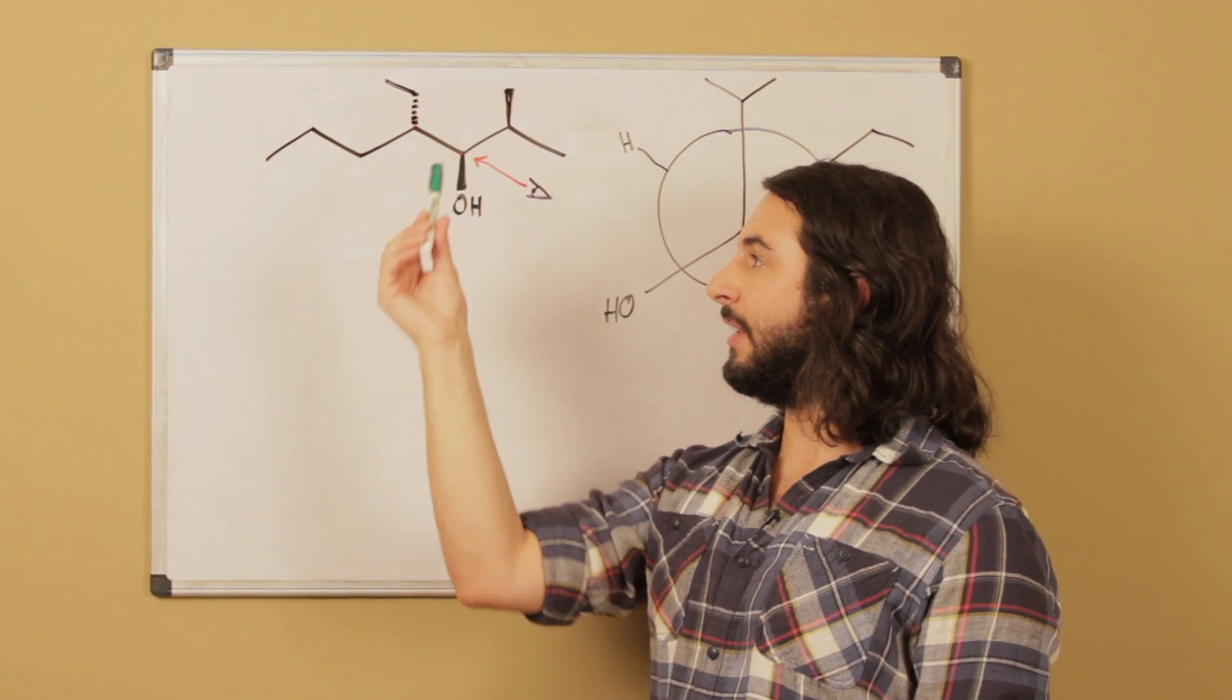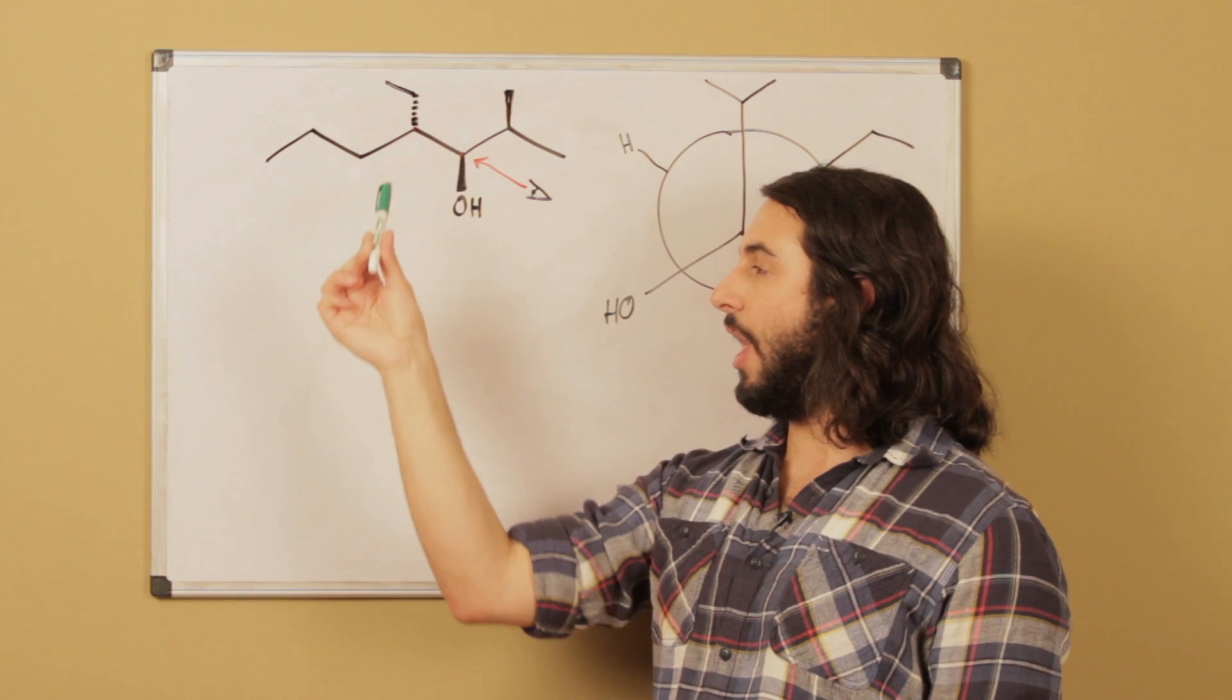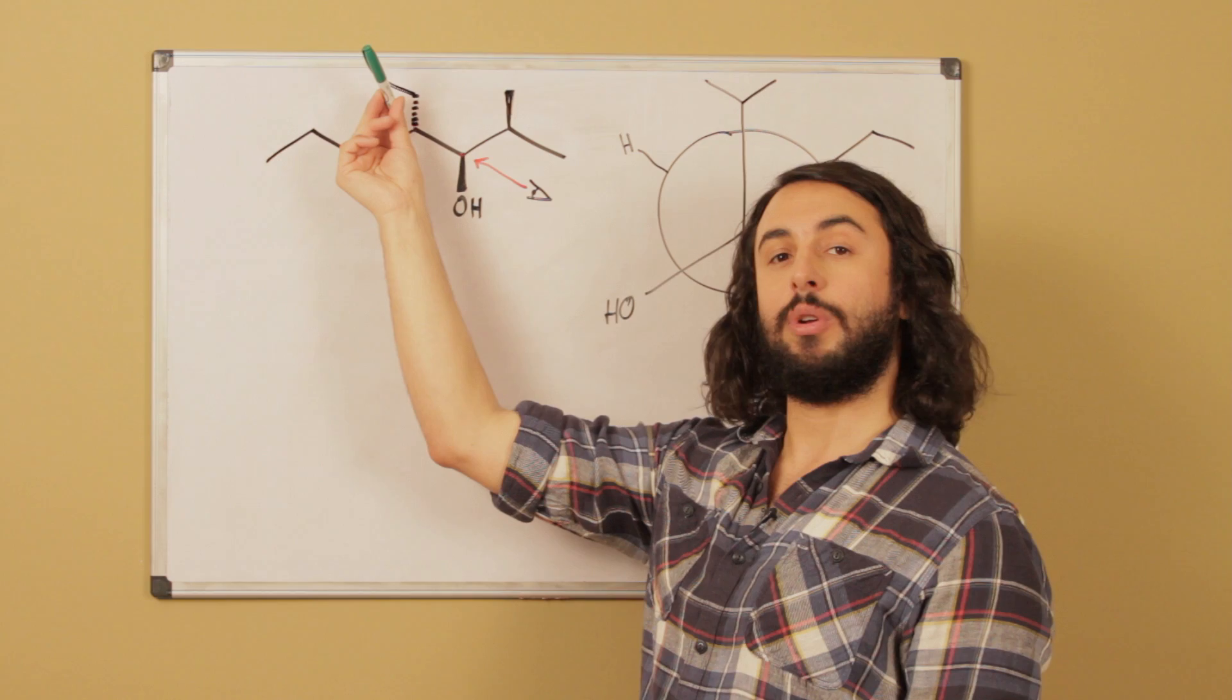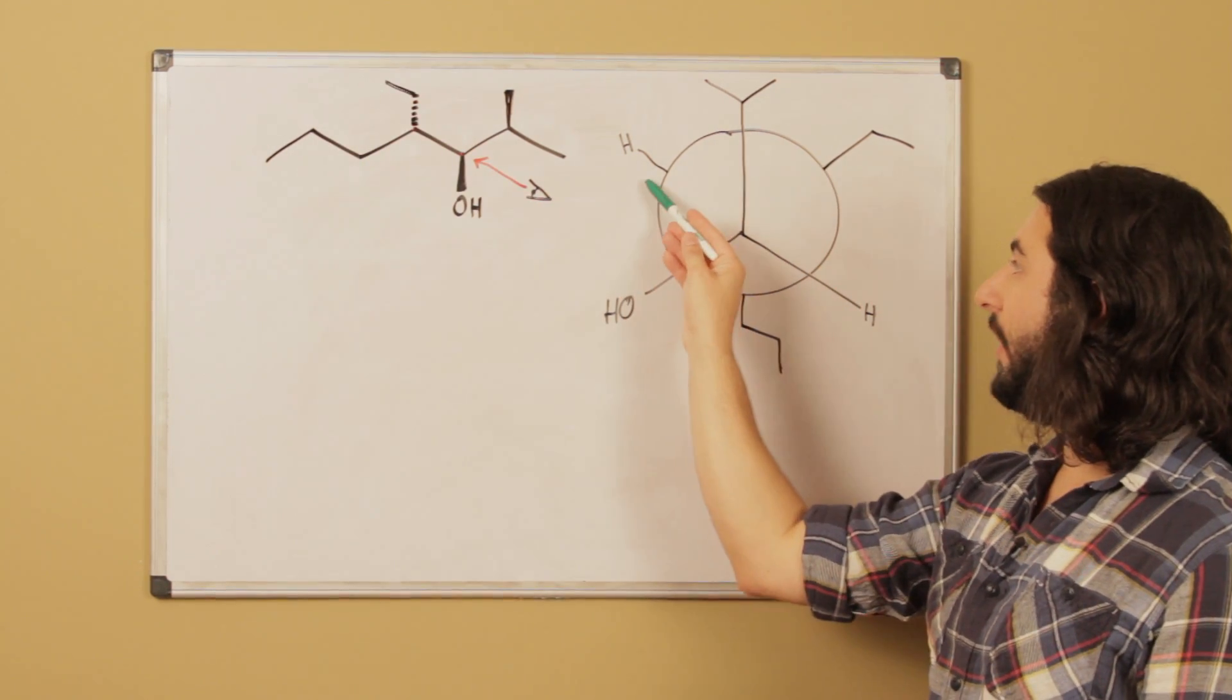On the dash bond, which is going this way, there's that ethyl group. So that is up and to my right, right there. And then the implied hydrogen, which would be on the wedge bond, that is going to be up and to my left.